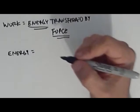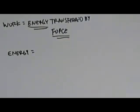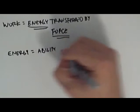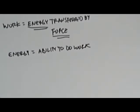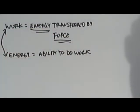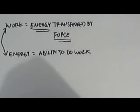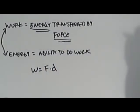So what exactly is energy? We've talked a little bit about this, but energy's definition actually is — as we look it up — energy is defined as the ability to do work. The definition here is kind of circular: work is energy transferred by force, and energy is something's ability to do work. Both work and energy are measured in joules.